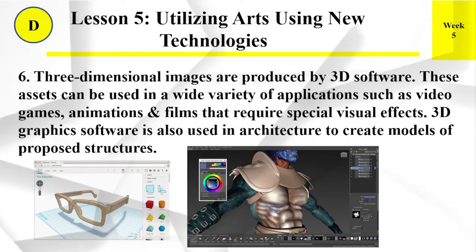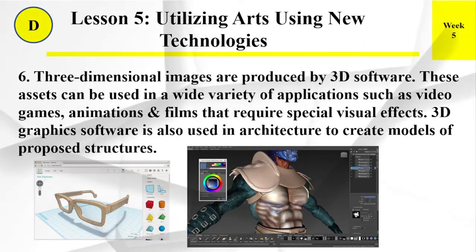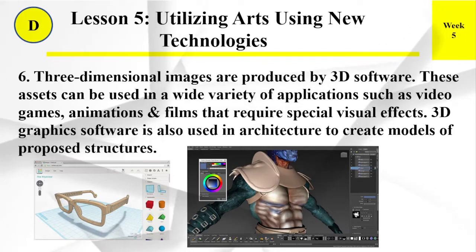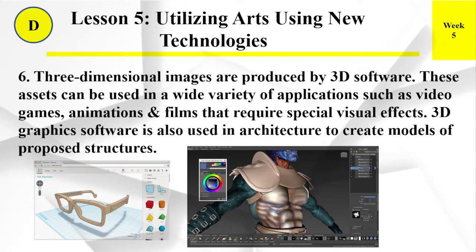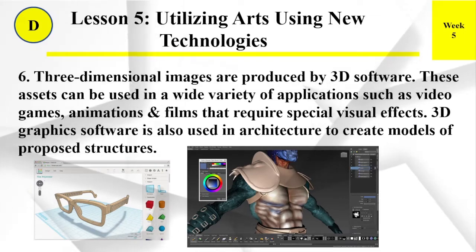Number 6: 3-dimensional images are produced by 3D software. These assets can be used in a wide variety of applications, such as video games, animations, and films that require special visual effects. 3D graphics software is also used in architecture to create models of proposed structures.